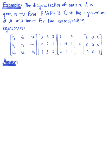The diagonalization of matrix A is given in the form P⁻¹AP = D. Now we want to list the eigenvalues of matrix A and the basis for the corresponding eigenspaces.